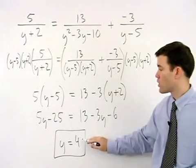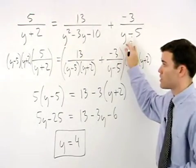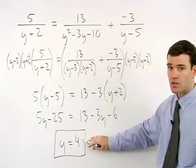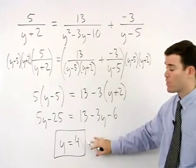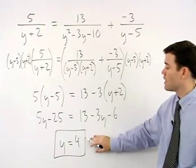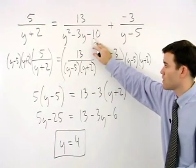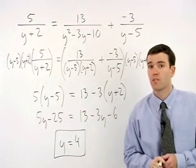Fortunately, in this problem it does not make any of the denominators equal to 0, so 4 is an acceptable answer. Remember, always check to see if your answer makes any of the denominators equal to 0 for every problem in this section.